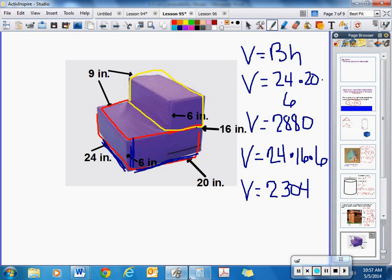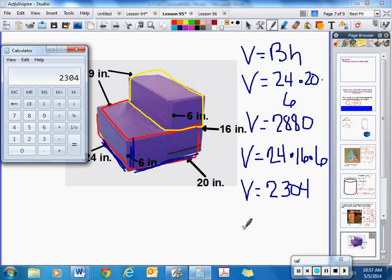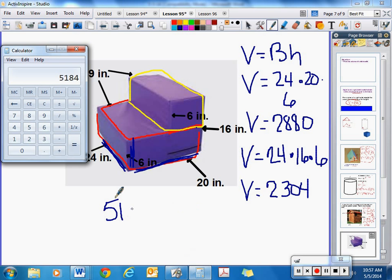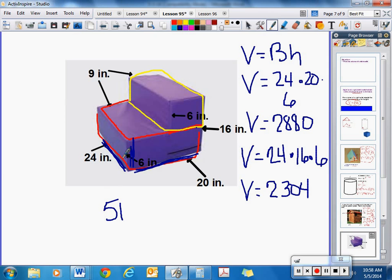Add those together. 2880 plus 2304 would be 5,184 cubic inches.